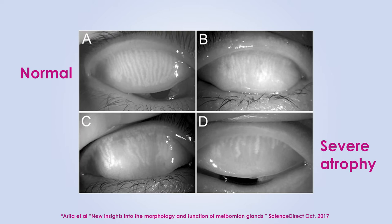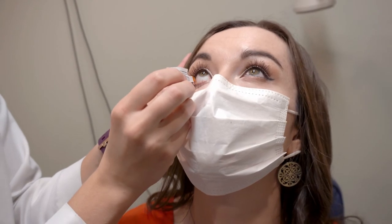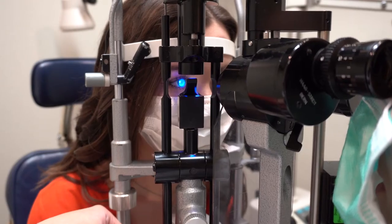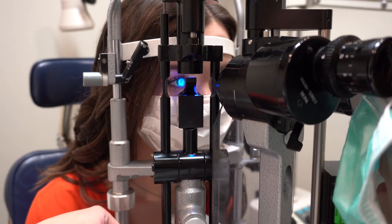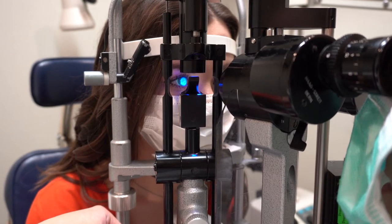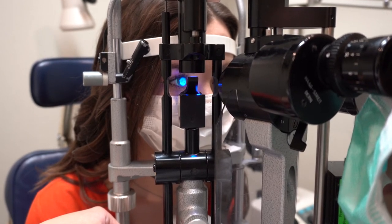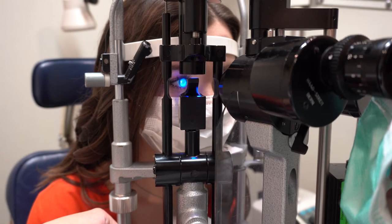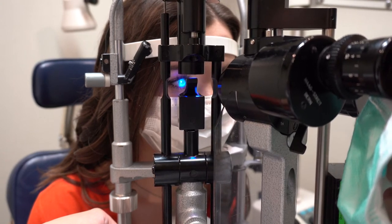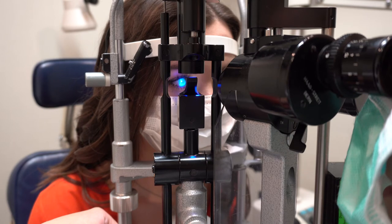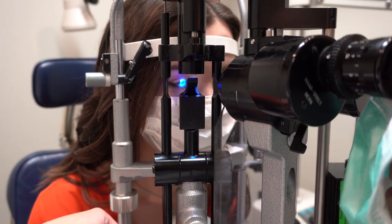Another objective exam finding we look for is the tear film stability. We will put a special drop of fluorescein dye in the eye and ask you to blink twice before refraining to blink for 10 to 15 seconds. During this time, we examine carefully how long it takes for dry spots to develop. Most patients should not develop dryness within the first 10 seconds. If that is not the case, we may write in the patient's chart that he or she has a decreased tear breakup time.